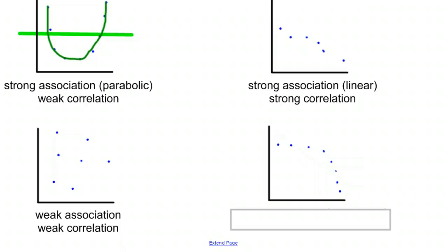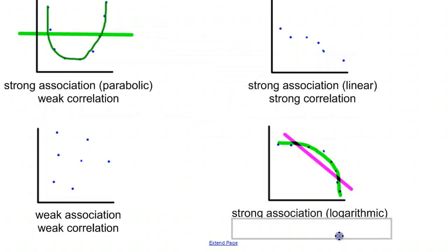And this last one here definitely has a distinct pattern to it, but it is not a very good linear pattern. Now, you'll notice that compared to this first one where the line really did not fit, you can kind of fit a line to this graph. So even though it is a logarithmic type of pattern, you can sort of fit a line to it. So you might say it has a moderate correlation.